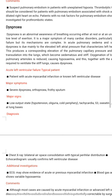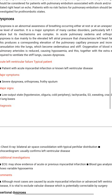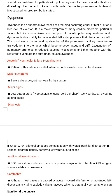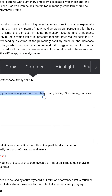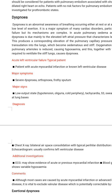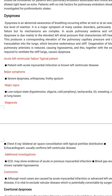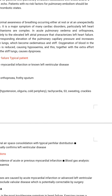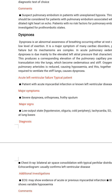Dyspnoea is a major symptom particularly of left heart failure, but its mechanisms are complex. In acute pulmonary oedema and orthopnoea, dyspnoea is due mainly to elevated left atrial pressure, which produces a corresponding elevation of pulmonary venous pressure and increased transudation into the lungs, making them oedematous and stiff. Oxygenation of blood in the pulmonary circulation is reduced, causing hypoxaemia, and this together with the extra effort required to ventilate the stiff lungs causes dyspnoea.